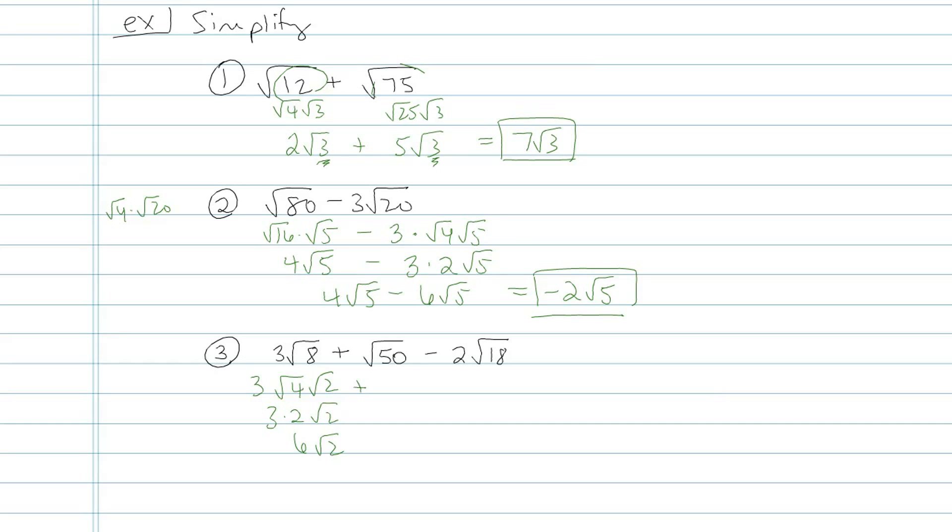Next term, I have root 50, so I'm going to make that the product of two numbers, 25 and 2. That's going to become 5 root 2, and then I'm just going to rewrite it since I'm working vertically.